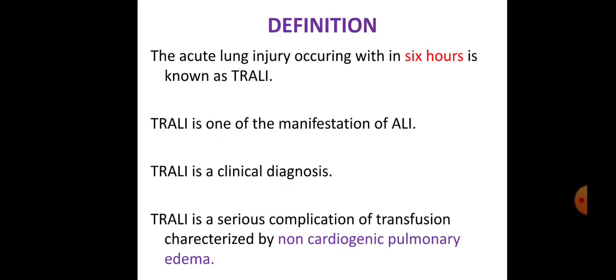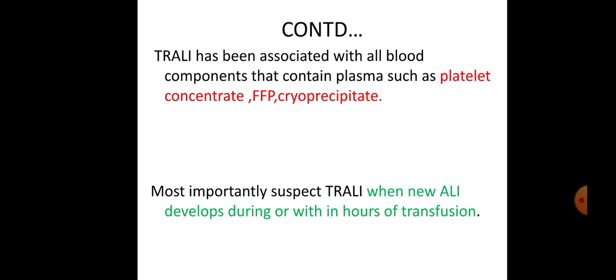First, the definition. Acute lung injury occurring within 6 hours is known as TRALI. TRALI is one of the manifestations of acute lung injury; it is a clinical diagnosis and is a serious complication of transfusion characterized by non-cardiogenic pulmonary edema. TRALI has been associated with all blood components that contain plasma, such as platelet concentrate, fresh frozen plasma, and cryoprecipitate. We suspect TRALI when new acute lung injury develops during or within hours of transfusion.